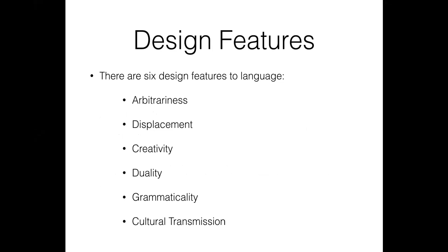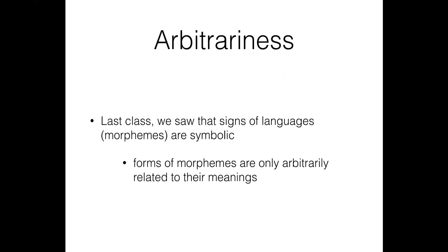The three-part substructure of language creates certain design features of language. It is these design features that actually distinguish language from any other communication system, such as animal communication or constructed languages. Your group activity is going to give you an example of what these design features look like, because when you practice and problem solve, things click a lot more than just listening to a lecture. The first design feature is that language is arbitrary.